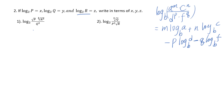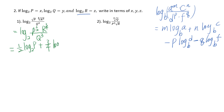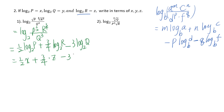So first of all, for number one, we need to change every factor into exponential form. That is log base 2 of (p to the one-half power times r to the three-fourths power over q to the third power), which equals one-half·log₂(p) plus three-fourths·log₂(r), then minus 3·log₂(q). This gives us (1/2)x + (3/4)z - 3y.